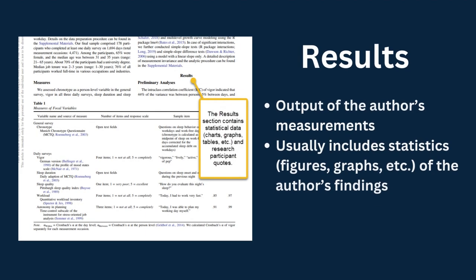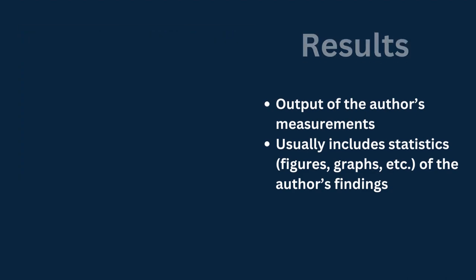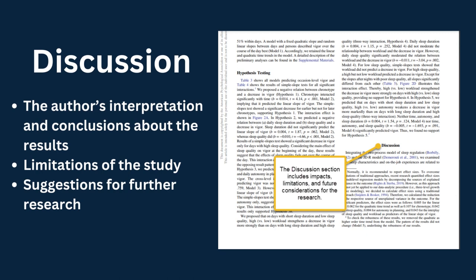The next section is Results. This is where you'll find the output of the authors' measurements. Lastly, you have the Discussion. This is where you will find the interpretation and conclusions about the results, the limitations of the study, and or suggestions for further research.